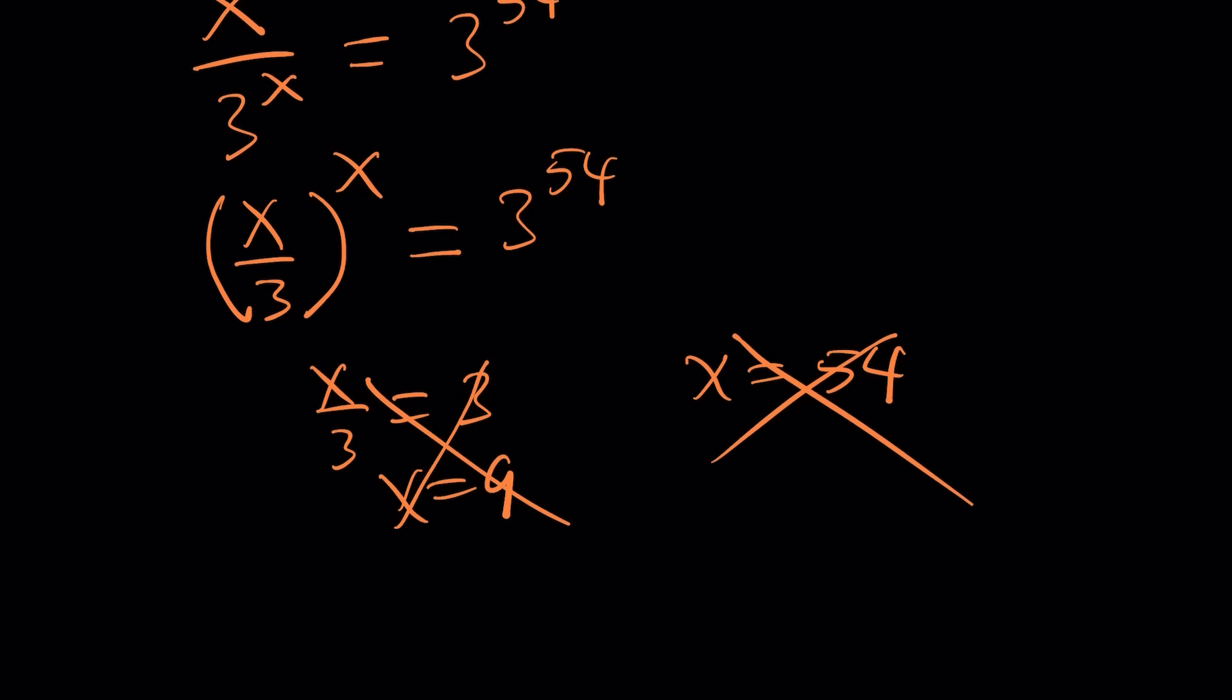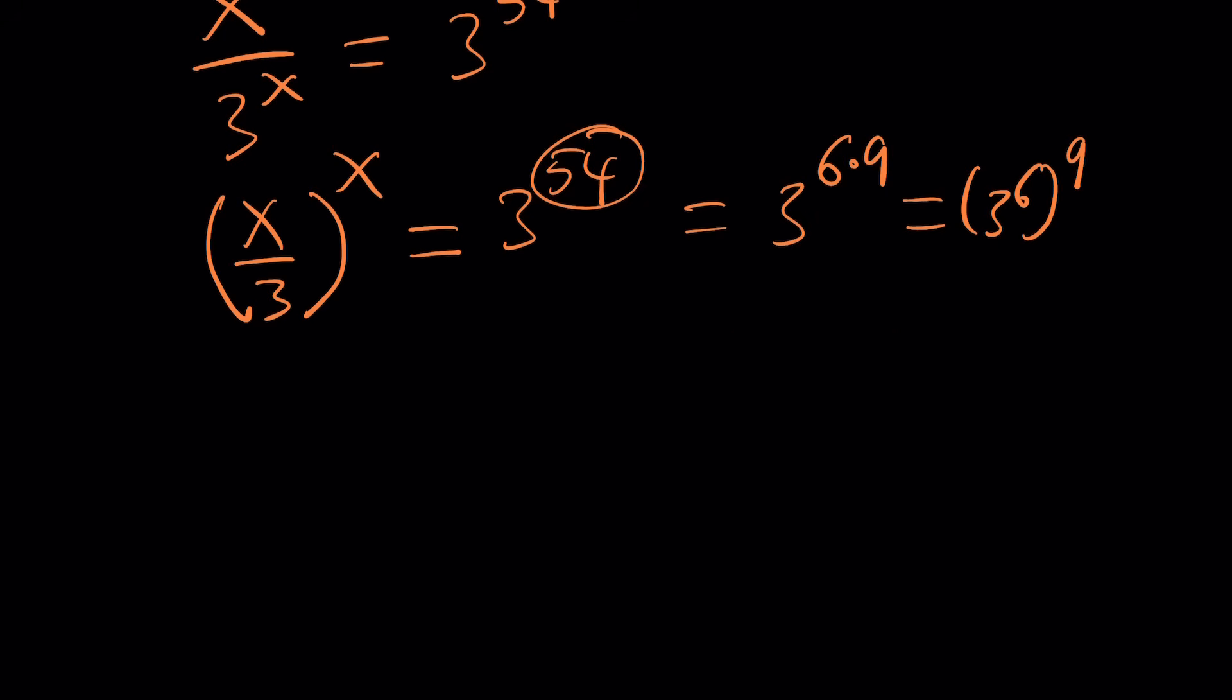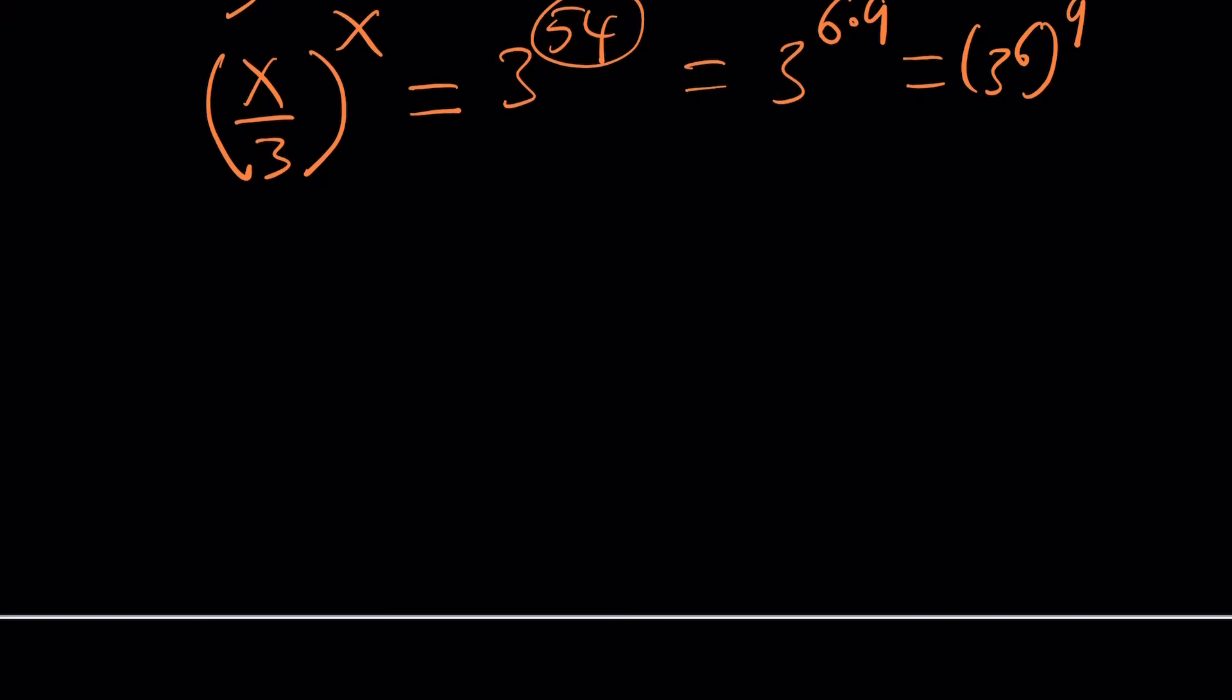Maybe you can kind of work it out by playing with the base. Write the 54 as a product of two numbers, like maybe 6 and 9. And then kind of separate it like 3 to the 6 to the 9. Obviously, I know that this is not going to work. But I'm just saying there is a way to do it such that the base is one-third of the exponent. Does that make sense? x over 3 is one-third of x. But there is a better way to do it. You don't really need to go into great lengths to fix this problem. Because there is definitely a much better approach. And this is what it is.